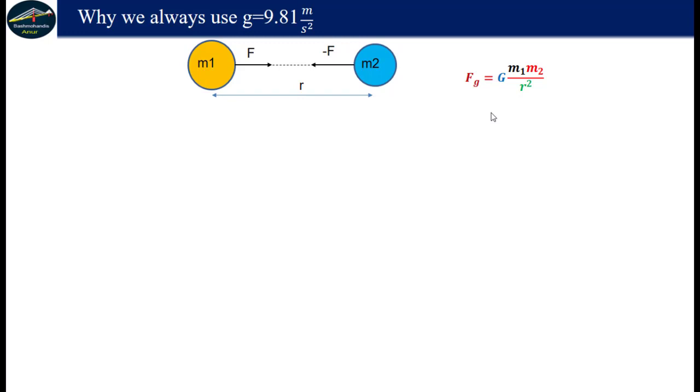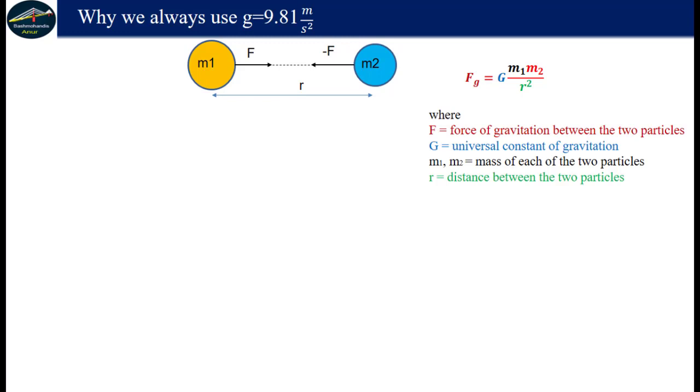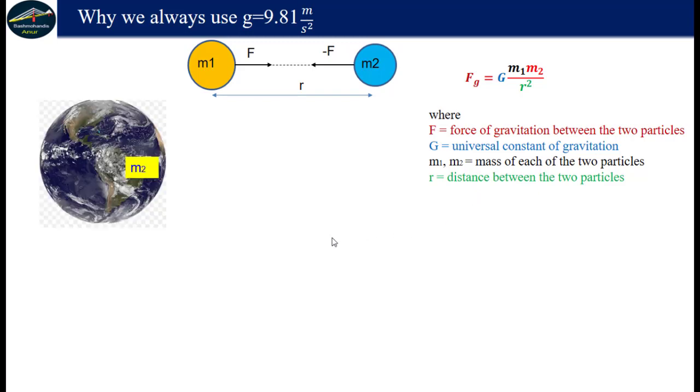This is the formula for Newton's law of gravitation. F is the force of gravitation between the two particles, G is the universal constant of gravitation, m1 and m2 are the mass of each of the two particles, and r is the distance between the two particles.